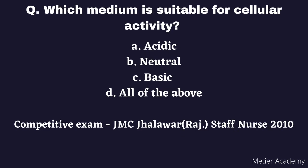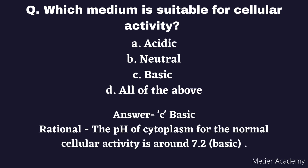The next question is: Which medium is suitable for cellular activity? Options are: A) Acidic, B) Neutral, C) Basic, D) All of the above. This question was asked in the 2010 Jawahar Raj Staff Nurse exam. The correct answer is Option C, Basic. The pH of cytoplasm for normal cellular activity is around 7.2, which is basic.